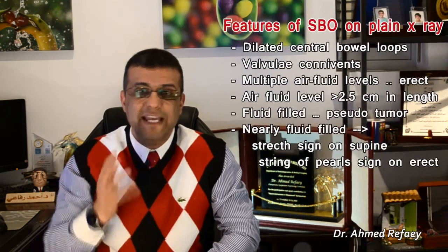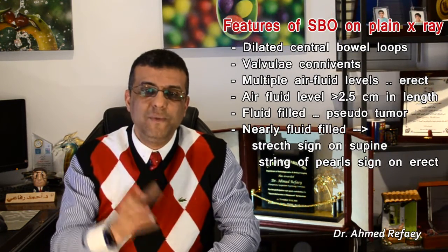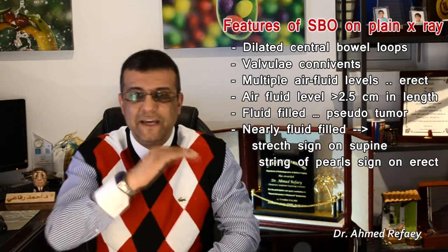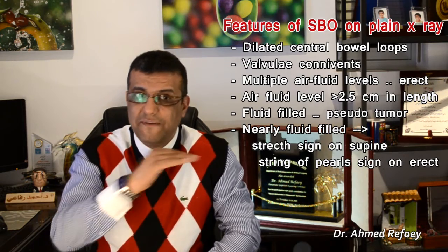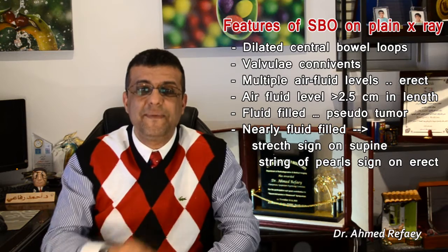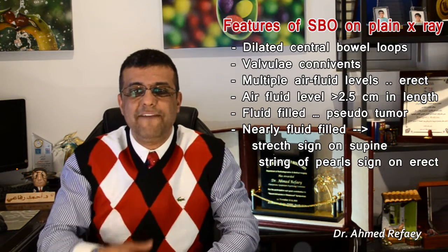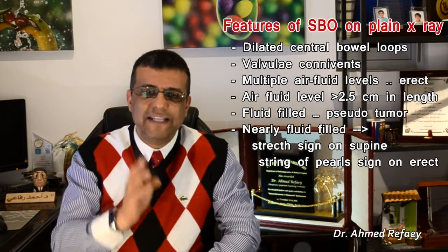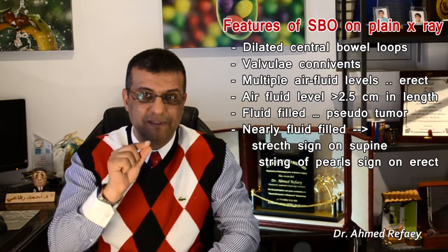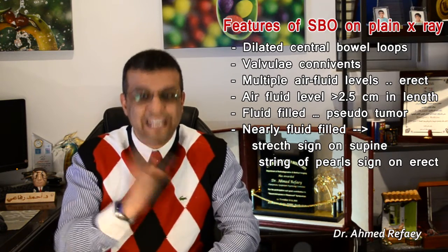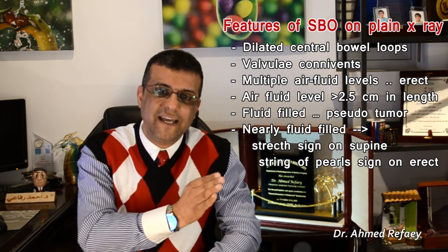Don't forget — the stretch sign and the string of beads sign are almost always indicative of small intestinal obstruction. To summarize the plain x-ray features of small bowel obstruction: dilated centrally located bowel loops with valvulae conniventes; multiple air-fluid levels on erect study, each more than 2.5 cm in length; pseudotumor sign in fluid-filled dilated loops; and stretch sign on supine or string of beads sign on erect radiograph when small air bubbles are trapped between the valvulae conniventes.